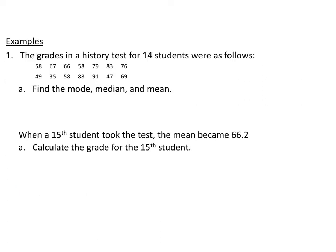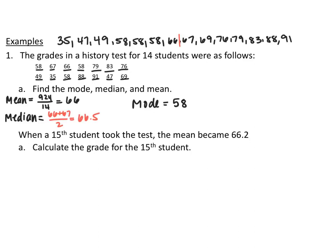Here's an example: grades on a history test for 14 students. Find the mean, median, and mode. Pause the video and do that. For the mean, I added all these numbers up and got 924 divided by 14 data points, so our mean is 66. For the median, I wrote the numbers in order smallest to biggest and found the median is between 66 and 67, so 66.5. The mode — the one that shows up the most — is 58.